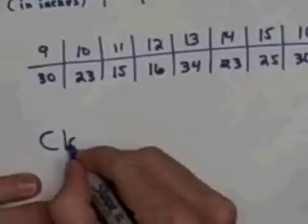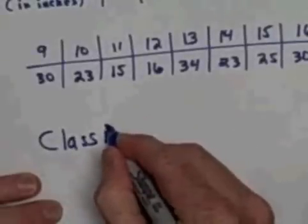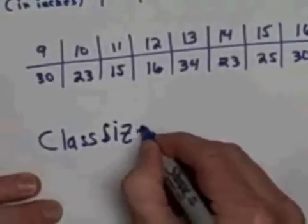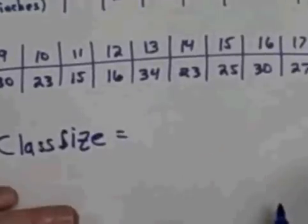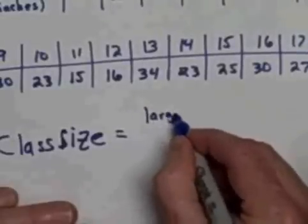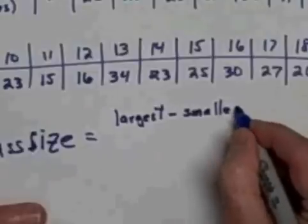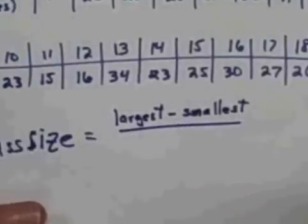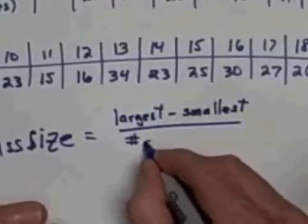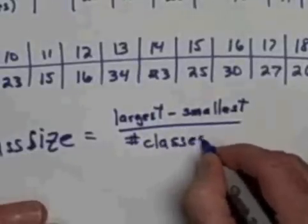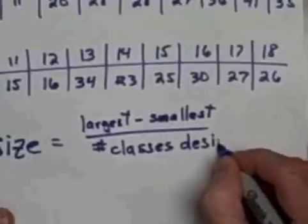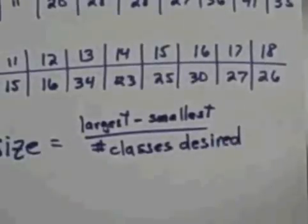The class size is equal to the largest value minus the smallest value in my set of data, all divided by the number of classes that I desire. Well, how many classes do we want? That's a good question. I was thinking that I would like five classes.